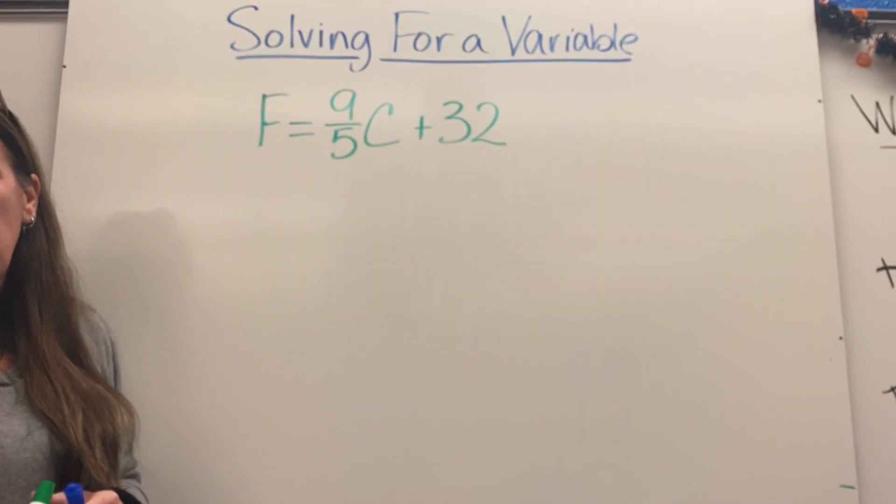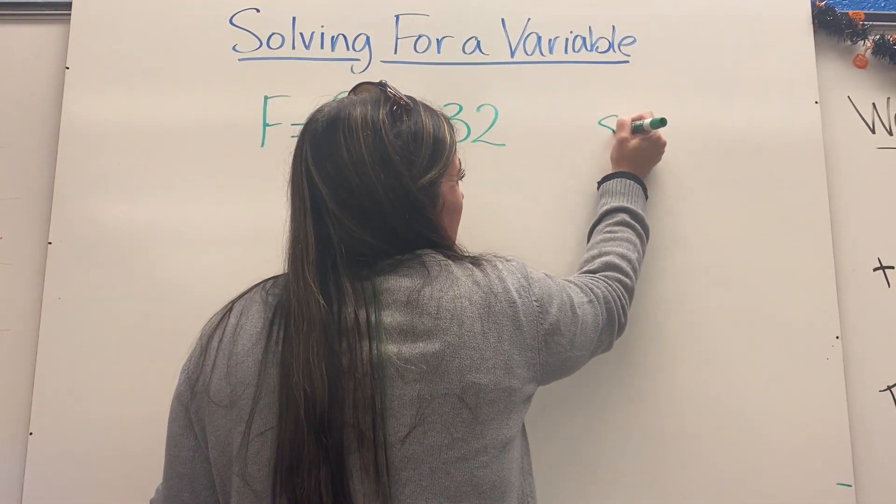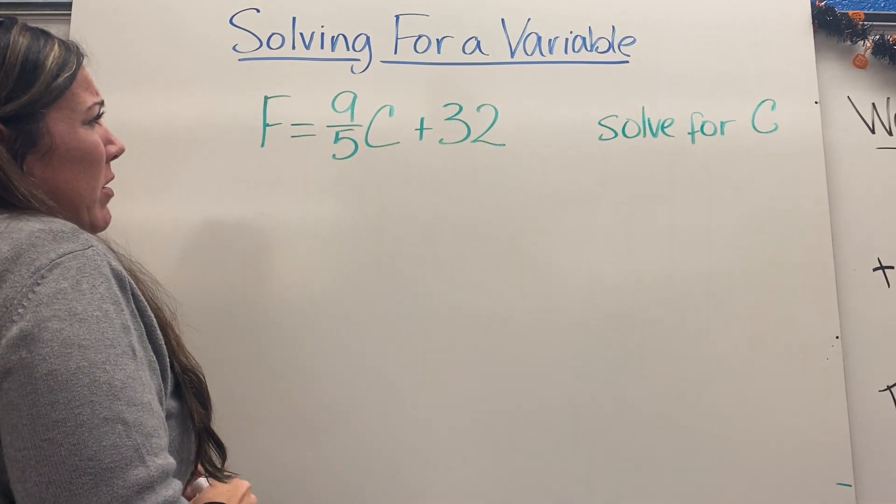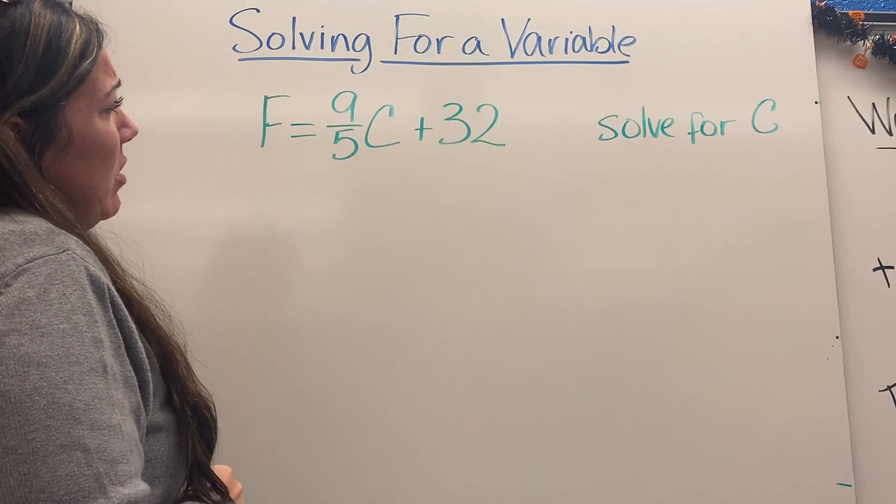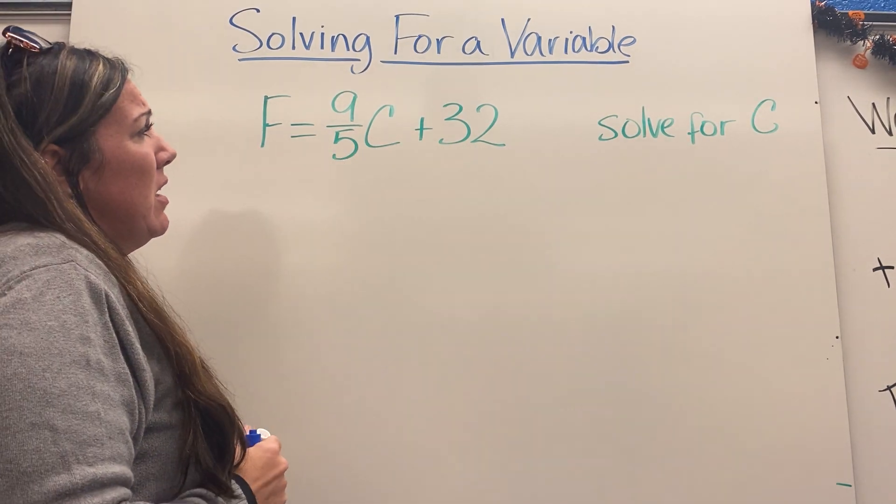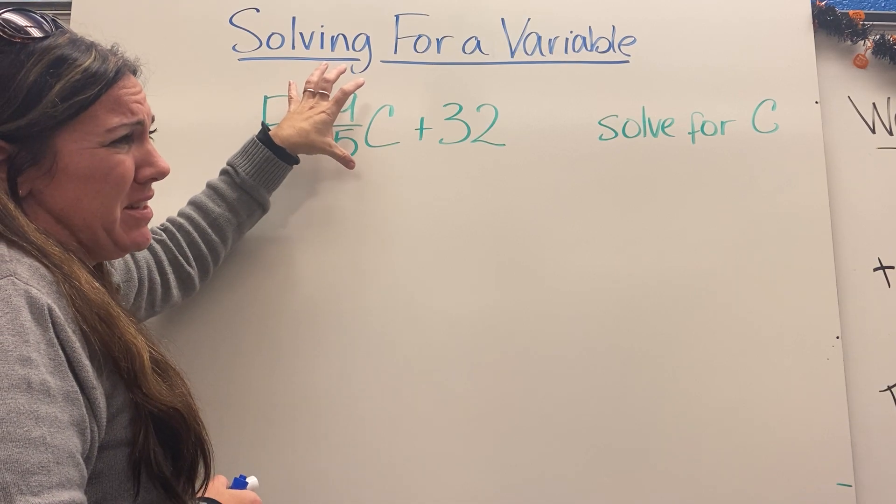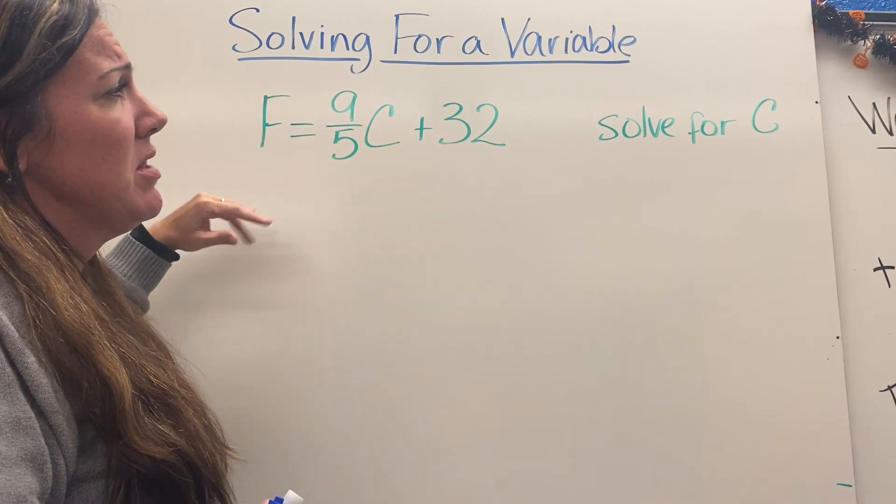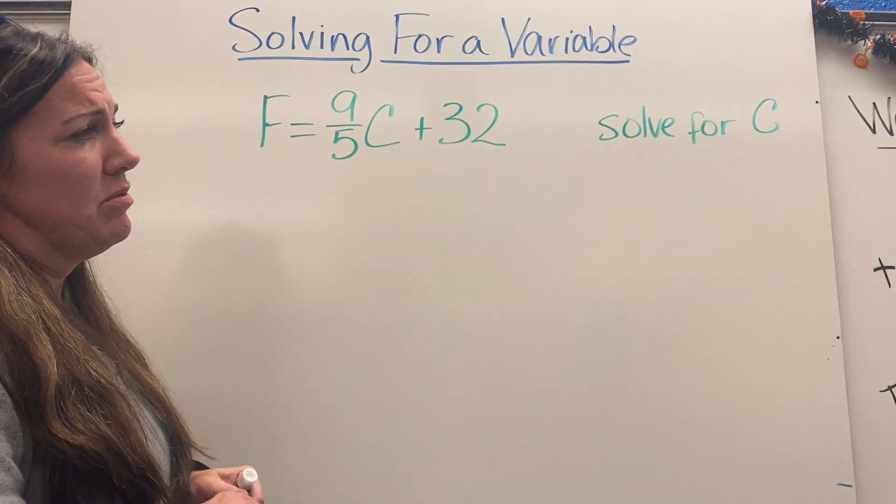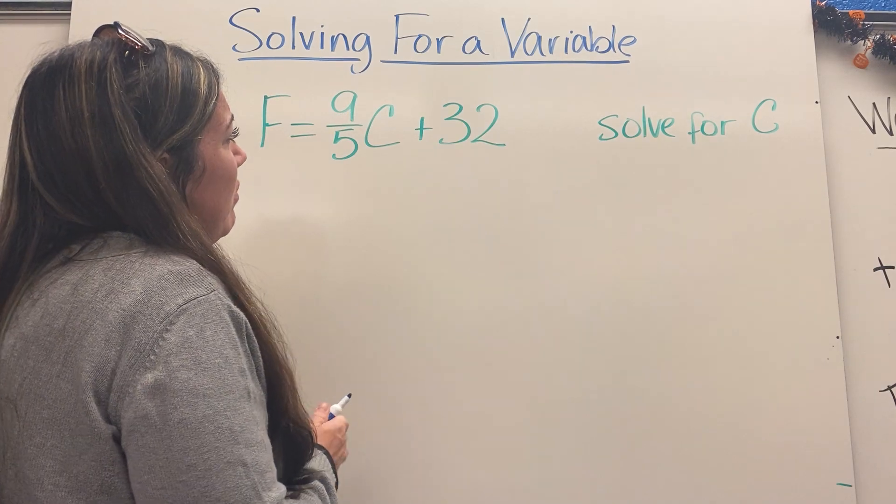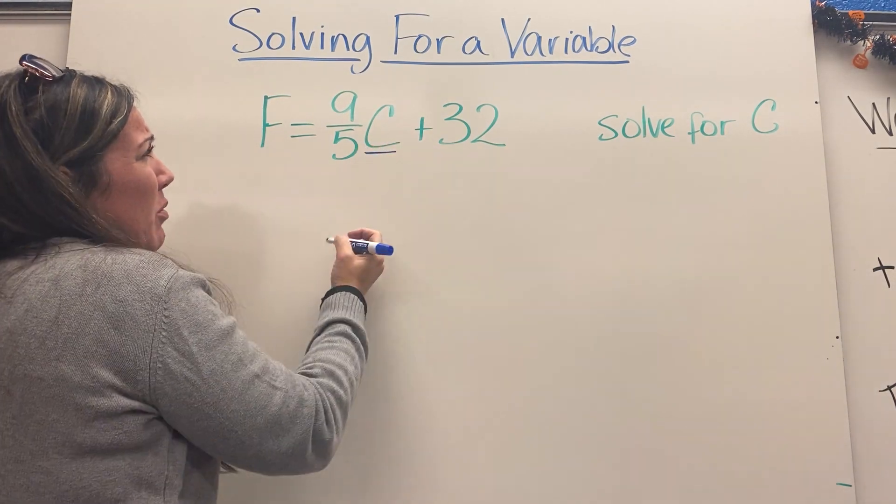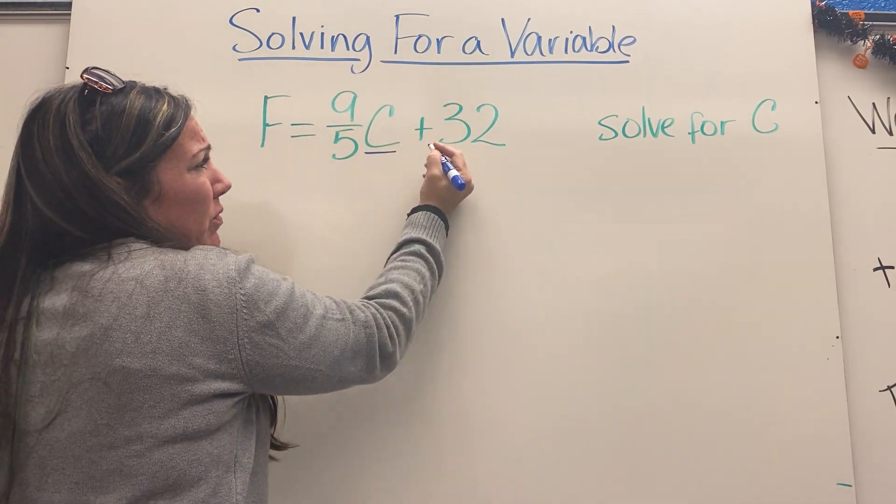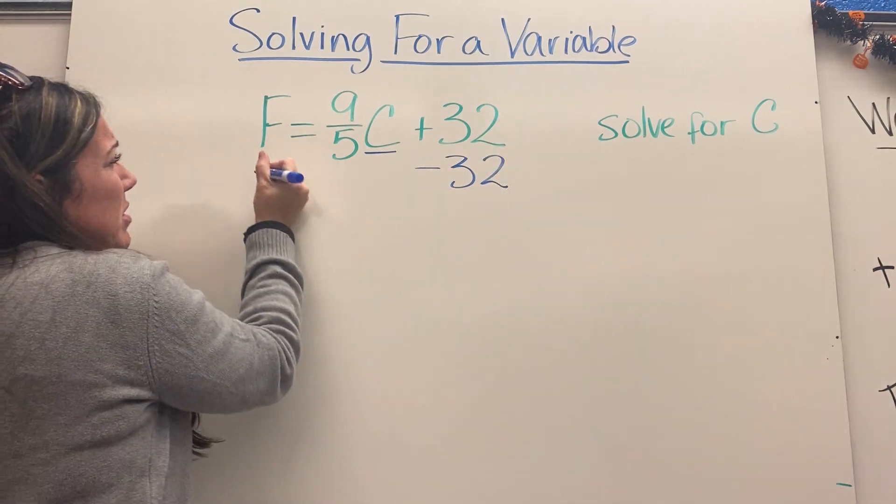What I want to do is solve this for Celsius. I'm going to look again at the variable I want and what's happening to it. I'm multiplying by nine-fifths and then adding 32 to that. This is very similar in setup to the last one, we just have this fraction here. I have to get this chunk of it by itself first, so I will subtract 32 from both sides.